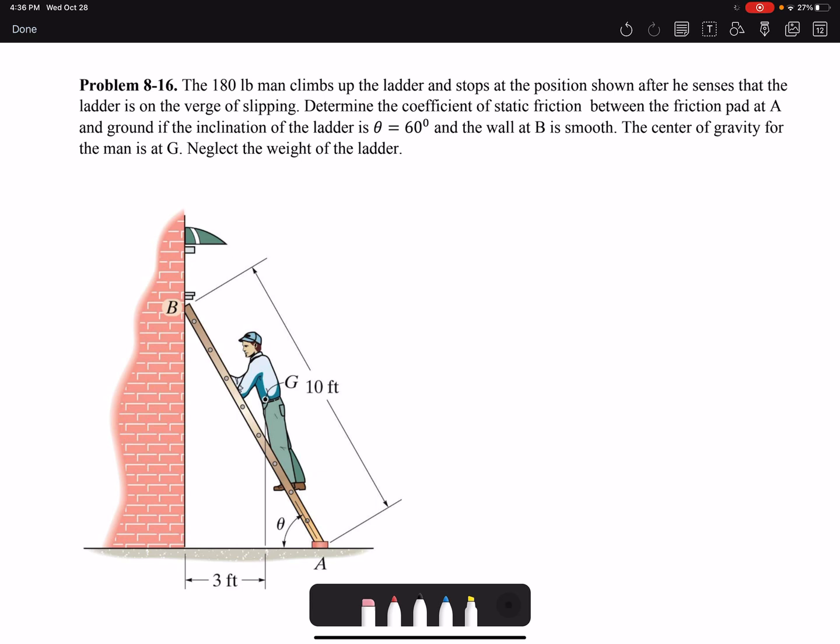That means we can use the friction equation. Determine the coefficient of static friction between the friction pad at A and ground if the inclination of the ladder is 60 degrees and the wall at B is smooth.